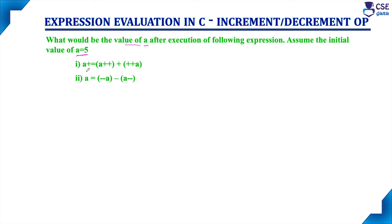The first expression is A plus-equal-to A-plus-plus plus plus-plus-A. The second expression is A equal to minus-minus-A minus A-minus-minus. Here, this is a post-increment operator and this is a pre-increment operator.